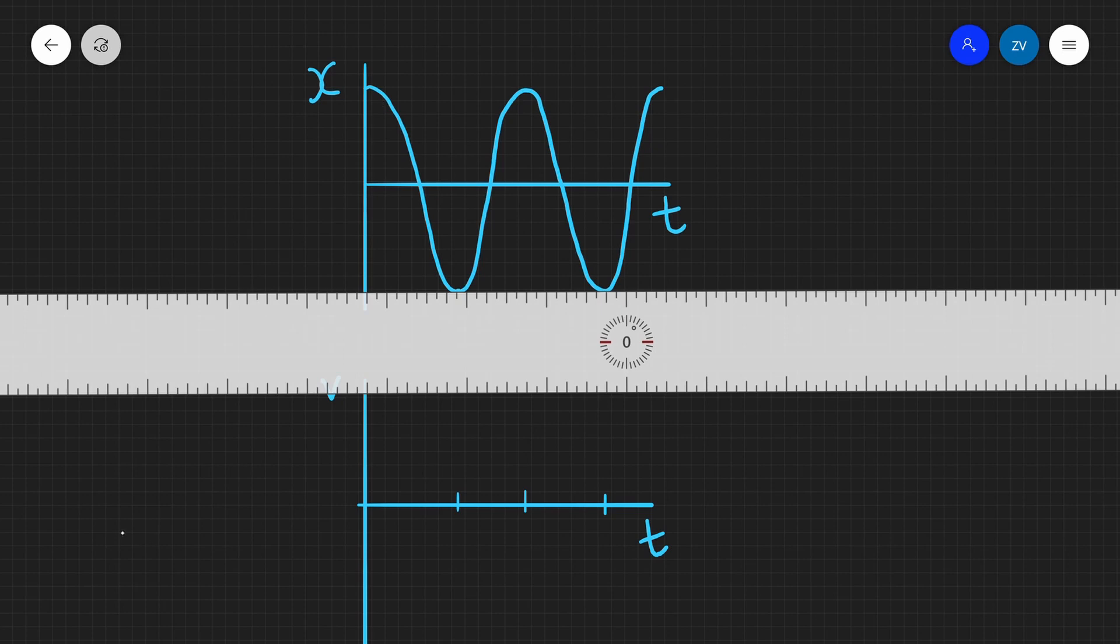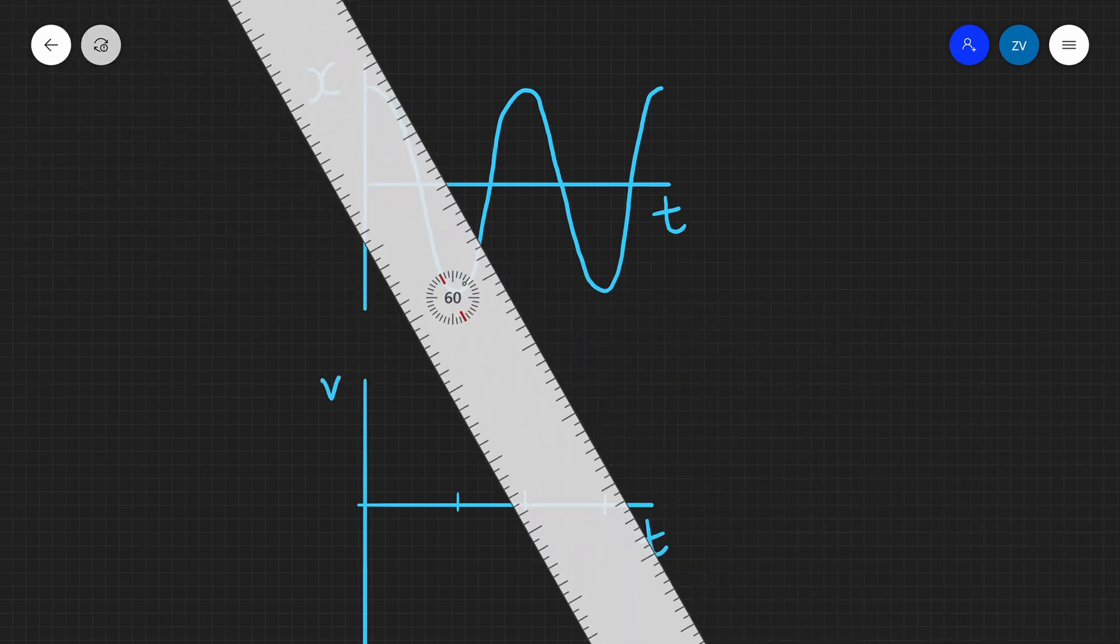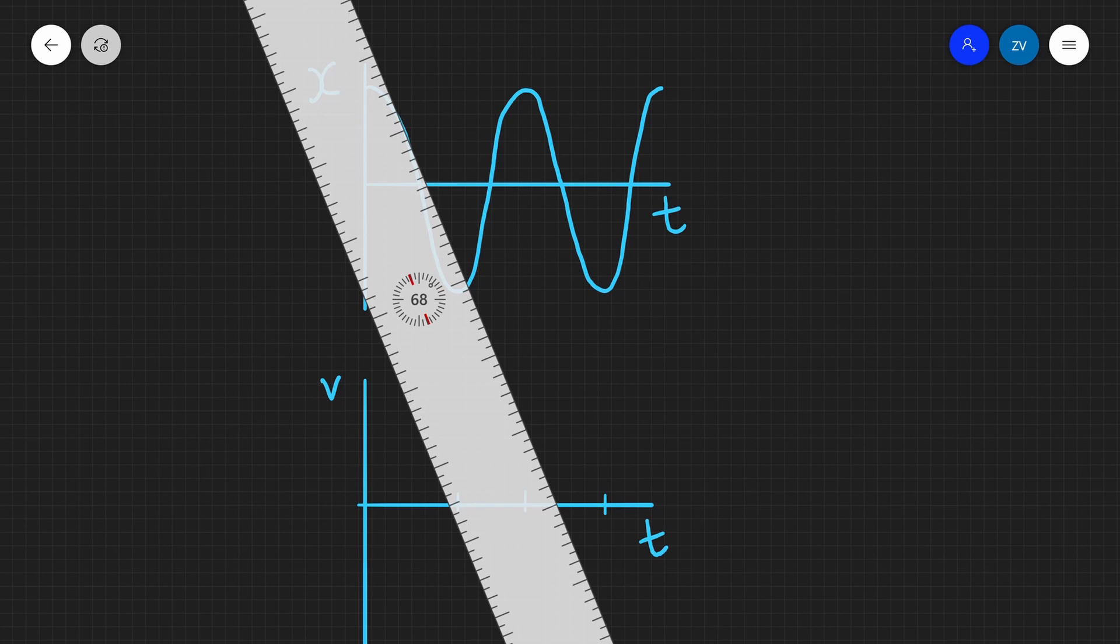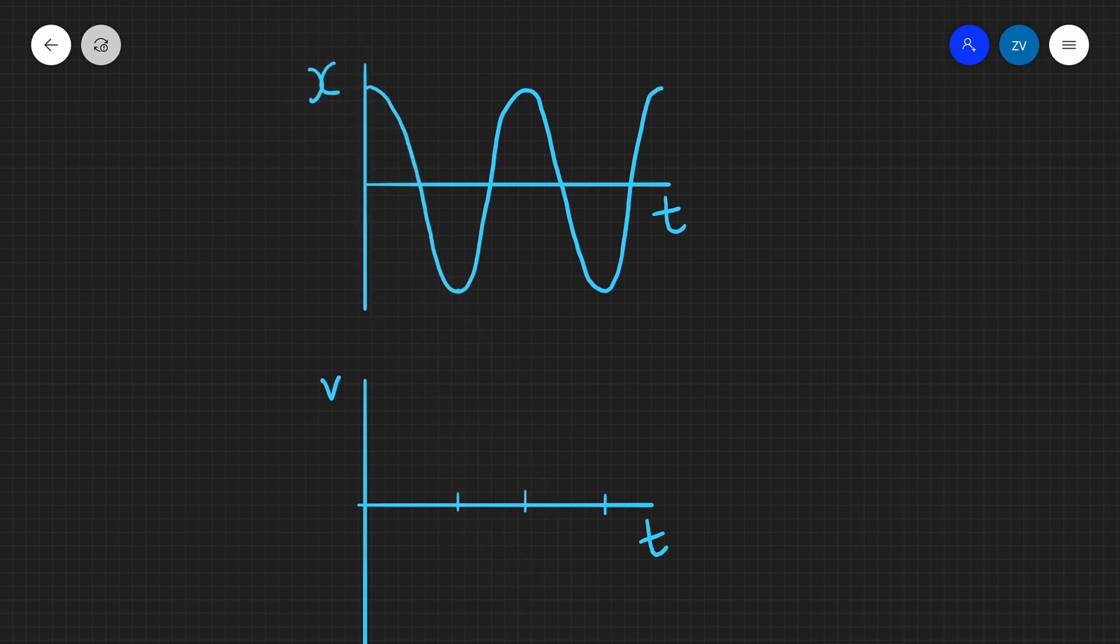The second thing that we need to consider is that in that initial little bit over here, we can see that the gradient is negative. So that means that our velocity will be negative as well, because velocity is defined as the gradient of the tangent line in this x against t graph. Okay, well, let's get started.